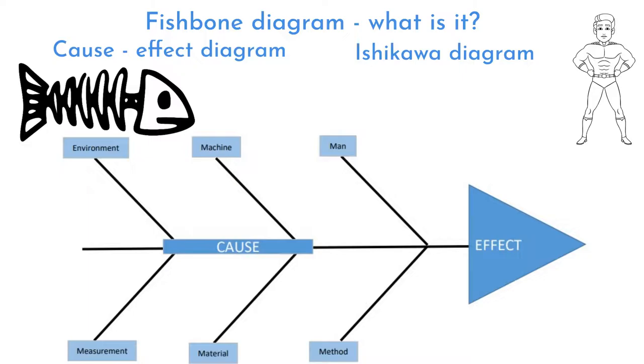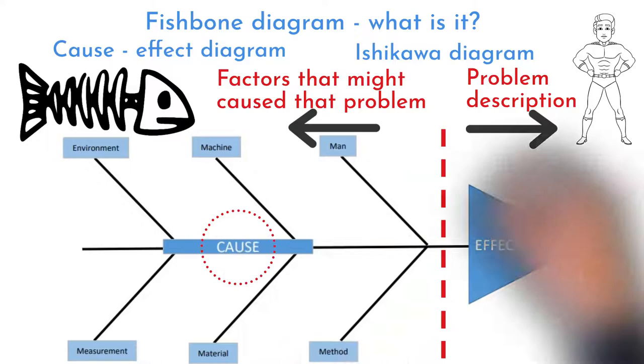Fish Bone Diagram is a scheme that by its structure reminds a fish and its bones. There is an addressed problem written into the fish head. This problem is an effect, caused by current malfunctioning investigated process. That is why it is called Cause-Effect Diagram.